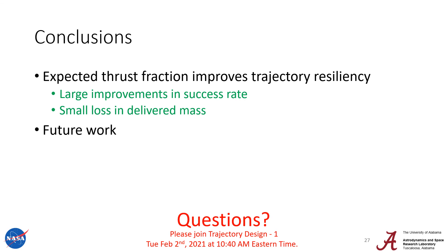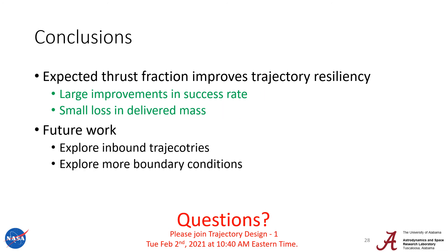In conclusion, we used expected thrust fraction to improve trajectory resiliency, going from about a 65% success rate all the way up to a 96% success rate, at a cost of only 12 kilograms of delivered mass. In the future, we want to use this to explore ERO's inbound trajectory as well as more complex boundary conditions. If you have any questions, I invite you to come to our talk in the Trajectory Design 1 session, Tuesday February 2, 2021 at 10:40 AM Eastern Time, where I'll give a recap of this presentation and answer questions.